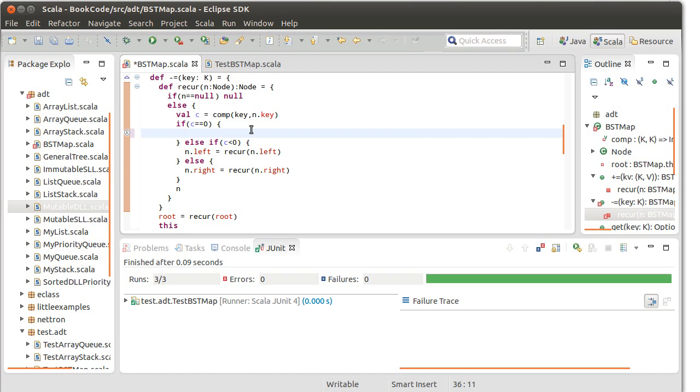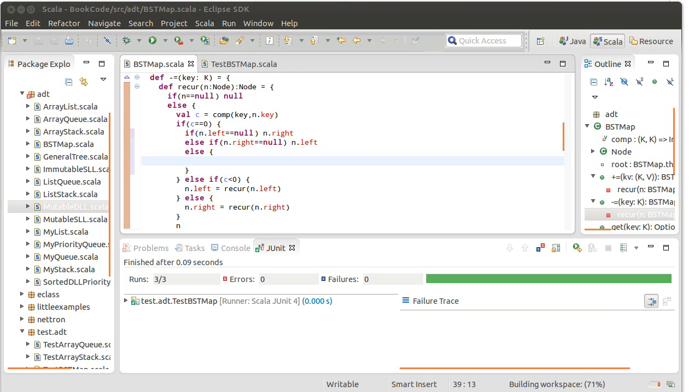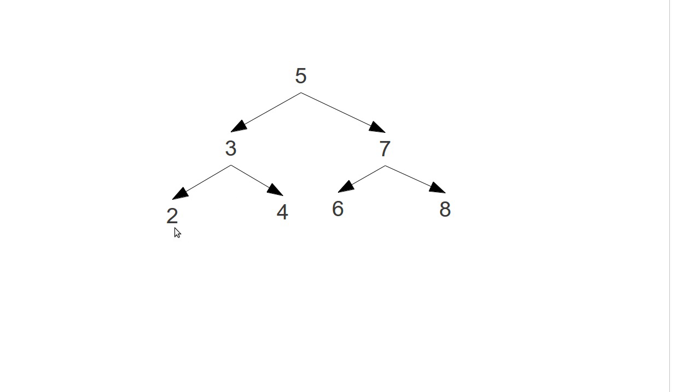So all of the work that we need to do is inside of this case here, which is we found the thing that we want to delete. In this situation, we have several special cases that we should handle. They are the easy cases. So if in dot left is null, then I simply want to return in dot right. Else, if in dot right is null, return in dot left. Else, hmm, you have two children.